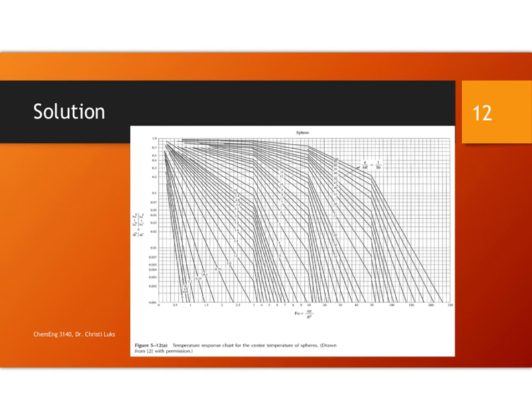So let's look at our Heisler chart. So in this particular case, we have information that we can use for all of this. We'll be looking for this. We know information about this. This is going to be our C0 minus C infinity over C initial minus C infinity. And so this is going to be 0.03, which is right here. So it's this line.